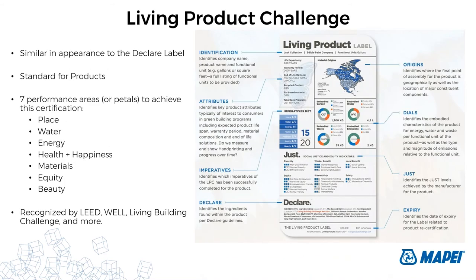The Living Product Challenge is similar to Declare labels — it's a multi-attribute certification. The LPC ensures products are healthy and free of toxins, socially responsible, respecting the rights of workers, installers, and manufacturers, and that they are net positive and benefit both people and the environment. There are seven performance areas, or petals, each with more detailed requirements or imperatives that manufacturers must achieve. It's developed by the International Living Future Institute for Living Building Challenge projects, but can also be used on LEED and WELL building programs.